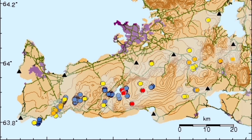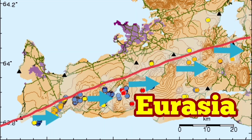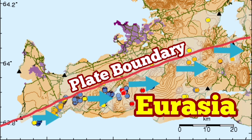The earthquakes, as I mentioned, are like a shaking of a ketchup bottle — it makes the magma possible to flow. When we plot these earthquakes, we see that the pull is toward Eurasia, from Eurasia. That is a plate boundary.